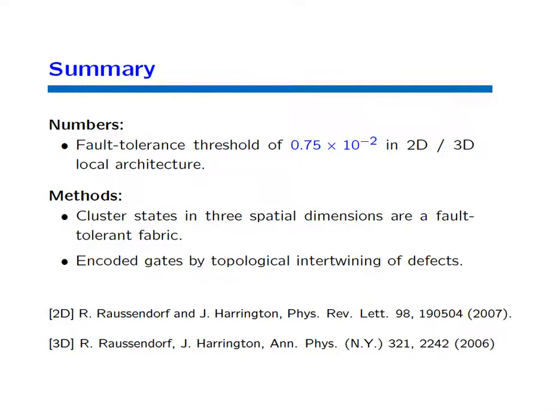In summary, this was about a scheme of fault-tolerant universal quantum computation based on cluster states. The key number is the error threshold: three-quarters of a percent of error per gate is allowed in the 3D cluster state architecture or its 2D surface code counterpart. In both cases, all operations are local — no long-range entangling gates are needed.